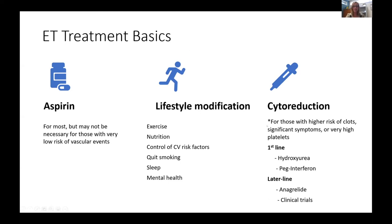We do have options for cytoreduction in ET. Standard first-line options — our good plan A's — are hydroxyurea or Hydrea, and PEG interferon or Pegasys. As far as later-line treatment options after trying one or both of these, anagrelide is an oral medication decent at decreasing platelet count but with many possible side effects. Clinical trials are also rising on the list of options, with better treatments now being investigated and significant resources going into developing new treatments for ET.